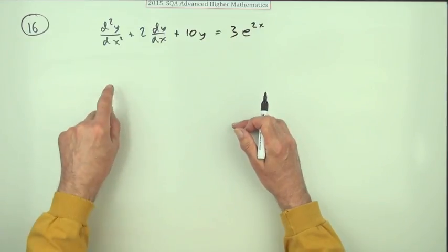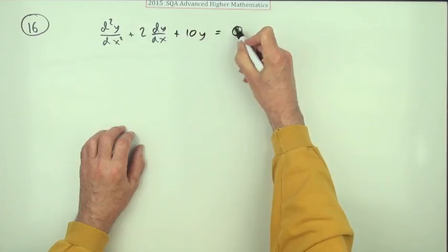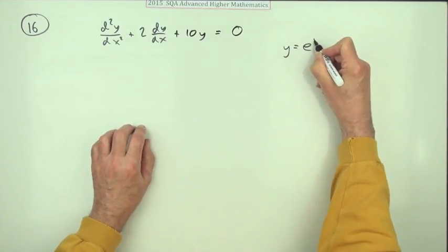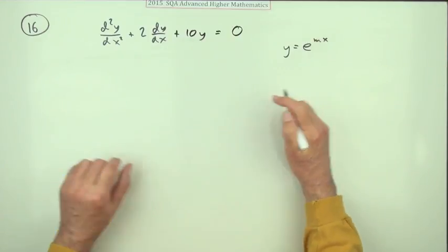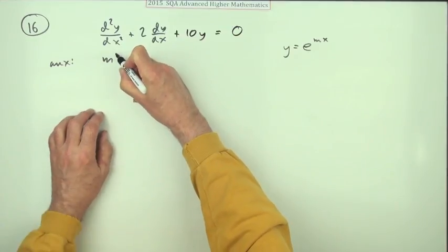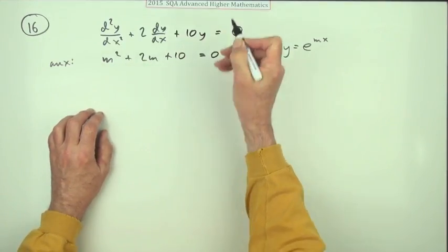So the first part is what about the complementary function, what about the solution to that equation equal to zero? Well of course what you do is you try solutions of the form e to the mx and when you pop that in you get the auxiliary equation which we just read: m squared plus 2m plus 10 equals 0.